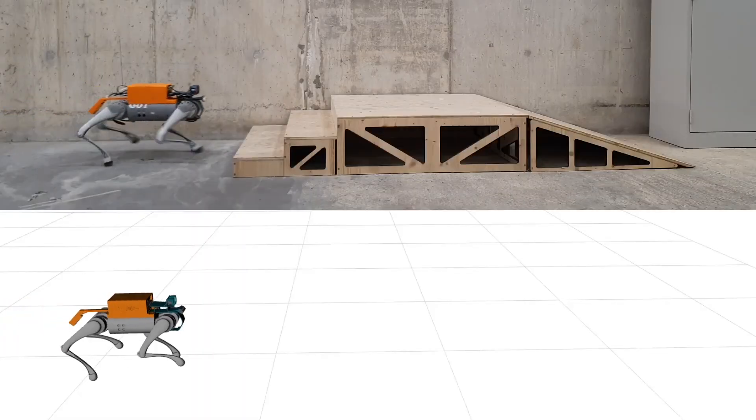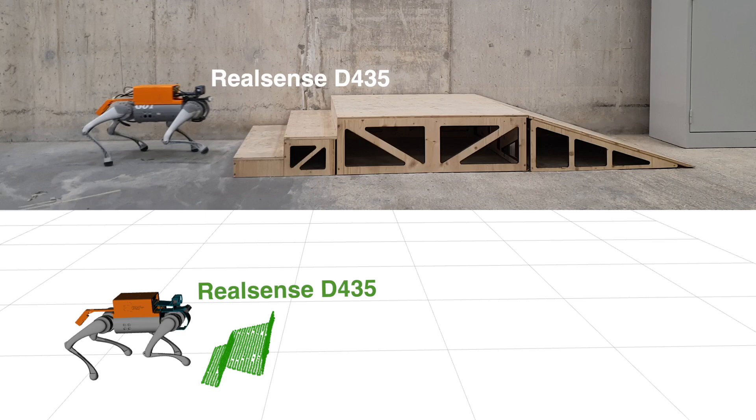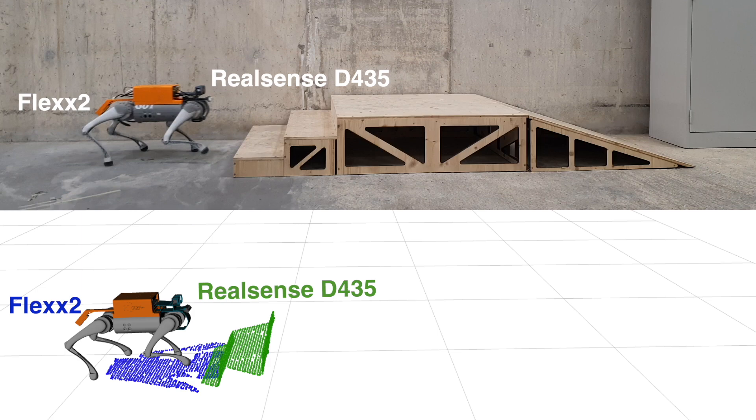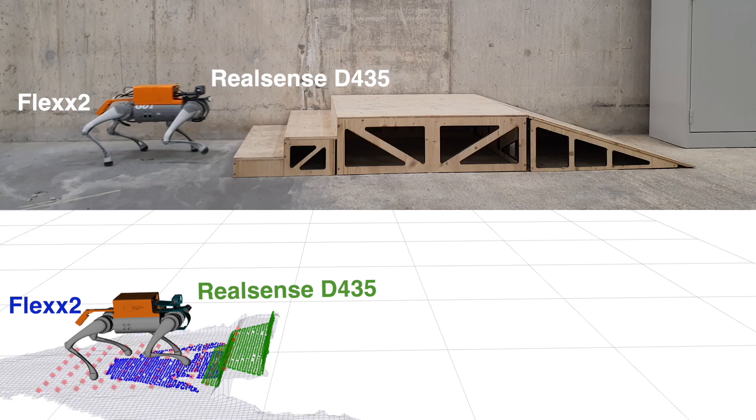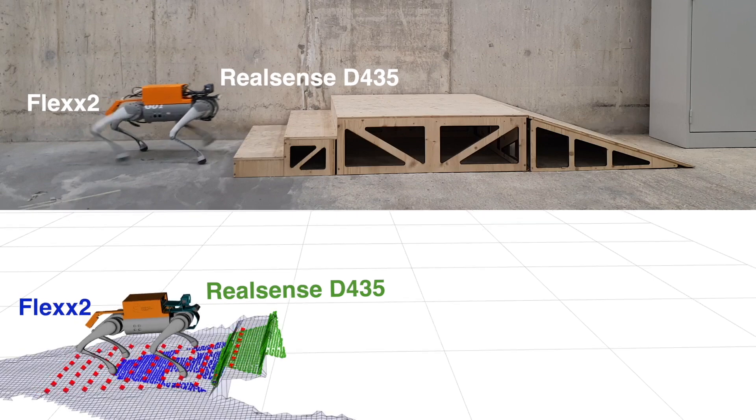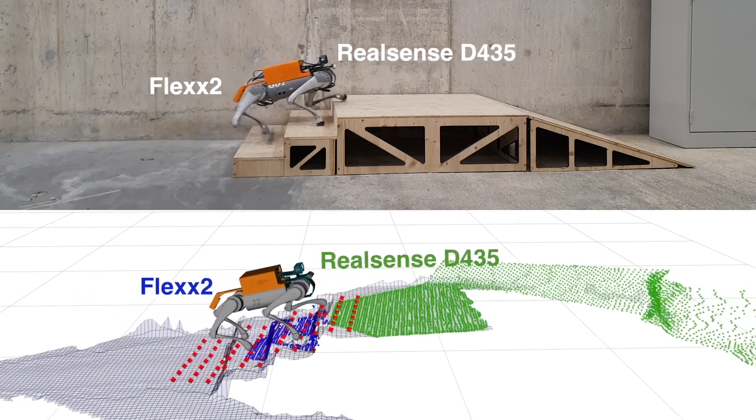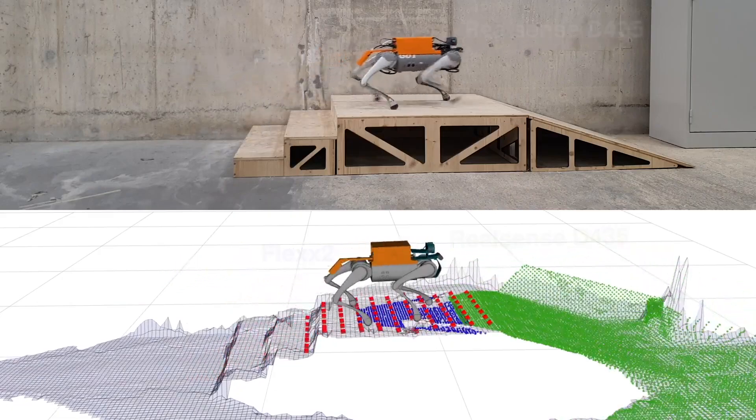Our robot relies on an Intel RealSense camera to map the ground in front of it. Additionally, we introduce a PMD-Flex2 time-of-flight based depth camera to map the ground directly beneath the robot for accurate and up-to-date data in close proximity. This data is used to create an elevation map that is further sampled and used by the controller to accurately place the feet.